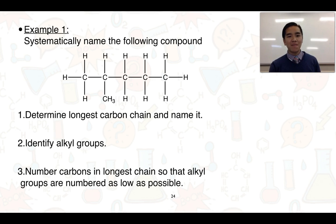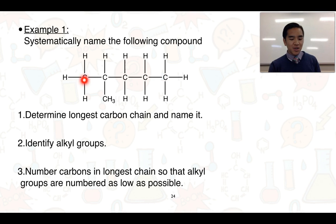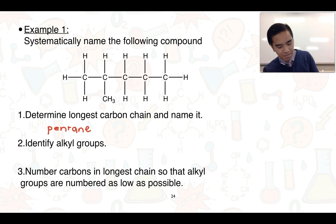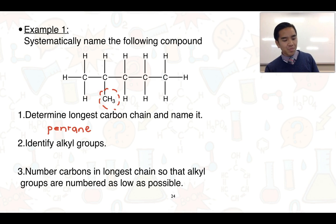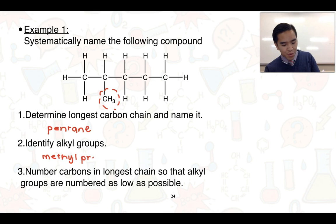For our first example, we need to systematically name a given compound. Step one: determine the longest carbon chain. Going from left to right, it's five carbons long, giving a 'pent' prefix — because it's an alkane, it's pentane. Step two: identify alkyl groups. There is a CH3 group not part of the parent chain, which is a methyl group. Building on step one, we can now call it methylpentane.